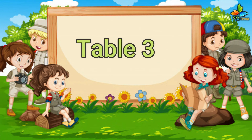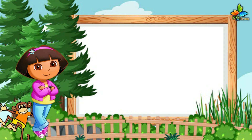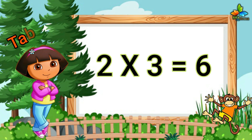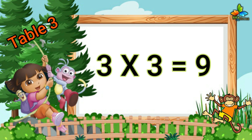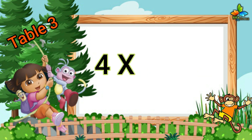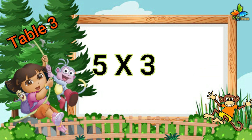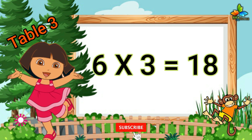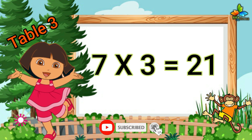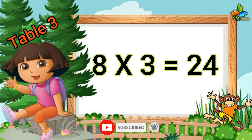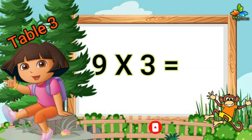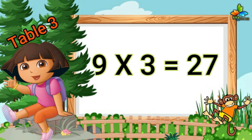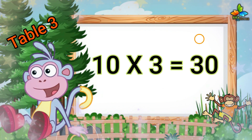Table 3. 1, 3 is 3. 2, 3 is 6. 3, 3 is 9. 4, 3 is 12. 5, 3 is 15. 6, 3 is 18. 7, 3 is 21. 8, 3 is 24. 9, 3 is 27. 10, 3 is 30.